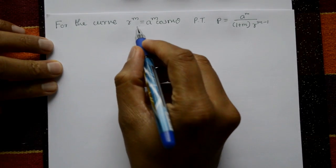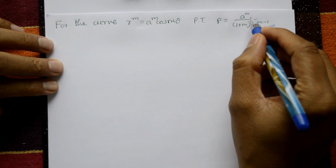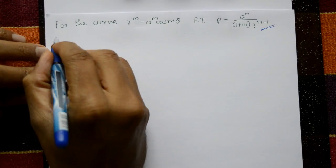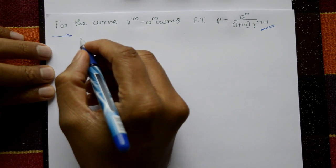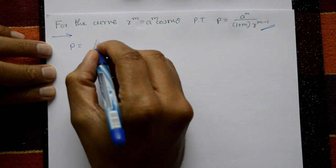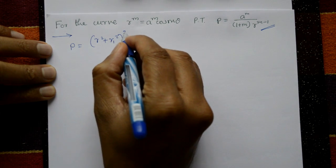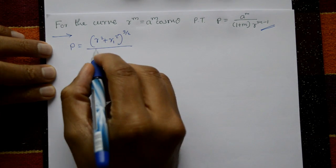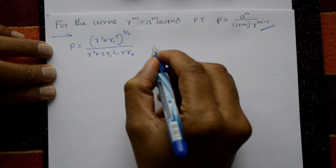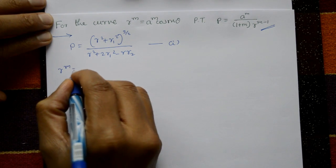Second problem: For the curve r^m = a^m · cos(mθ), prove that ρ = r^m / [(1 + m) · r^(m−1)]. Using the radius of curvature formula in polar form: ρ = (r² + r1²)^(3/2) / (r² + 2r1² − r·r2). This is equation number one.